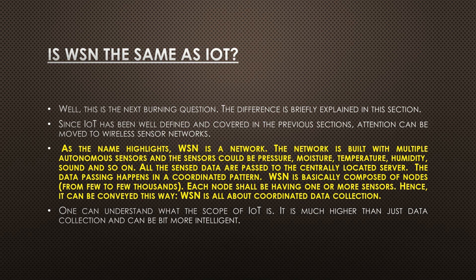Many people have misunderstood — including me at some point — what WSN is and whether it is the same as IoT. They are definitely not the same. WSN is Wireless Sensor Network — it is a network built with many autonomous sensors. The sensors can be as simple as pressure, moisture, temperature, or humidity sensors. All the sensed data is passed centrally to a centrally located server in a coordinated pattern. Basically, WSN is a group of connected nodes composed of multiple nodes, each of which may have many sensors — potentially thousands — and all the collected data is sent and stored in a centralized server.